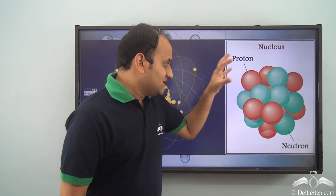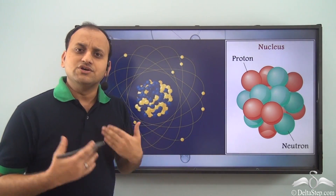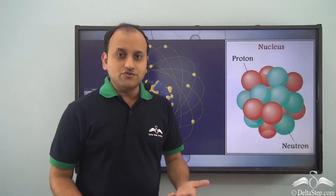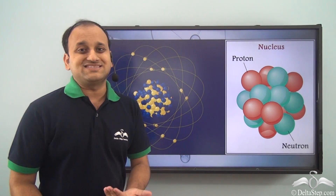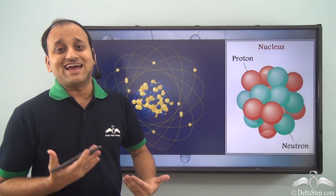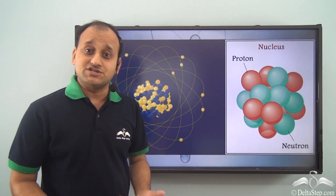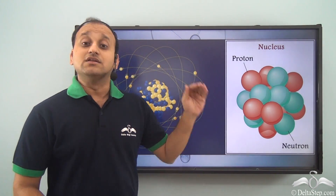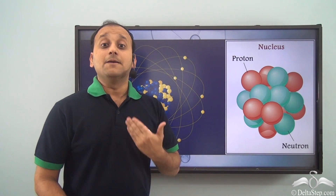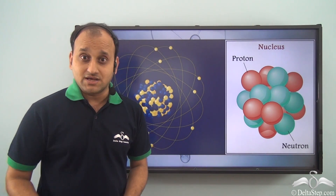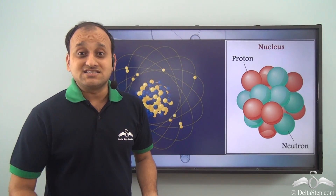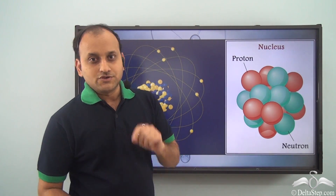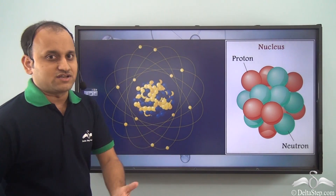Now this nucleus is usually very stable, so you will usually not see any reactions or radiations from the nucleus. But in certain cases the nucleus becomes unstable and then it starts emitting radiation. So let's understand with an example.